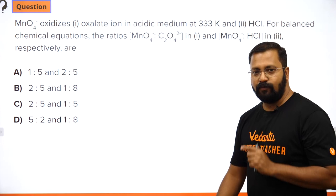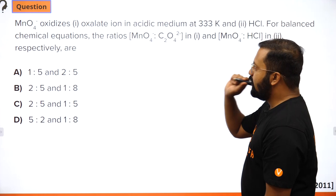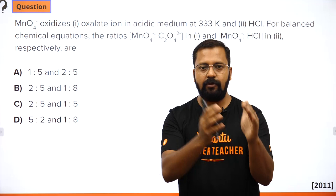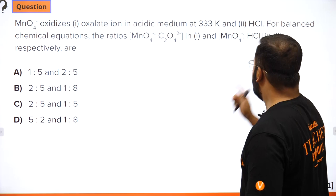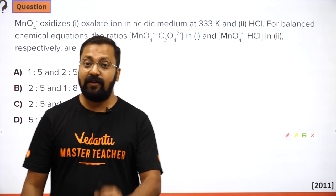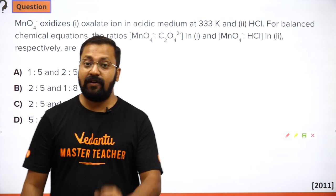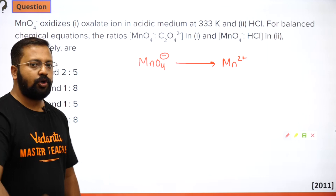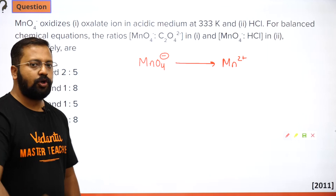The next question is very interesting with a lot of chance to make mistakes. MnO₄⁻ oxidizes oxalate ions in acidic medium and also oxidizes HCl, performing two reactions separately. To solve this, first remember that MnO₄⁻ in acidic medium always converts to Mn²⁺ — regardless of which acid is present, it always changes to Mn²⁺ in acidic medium.